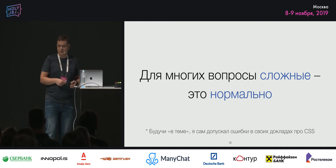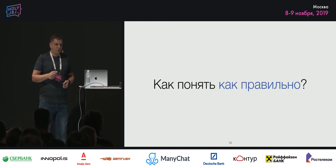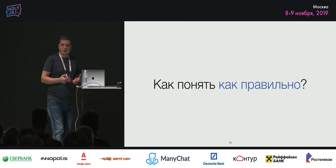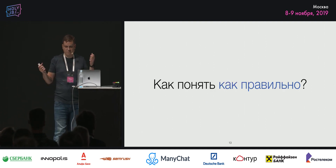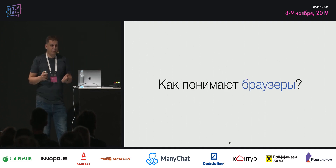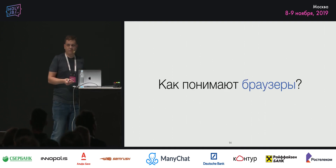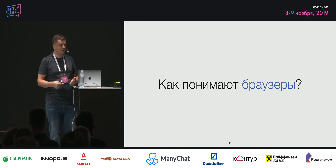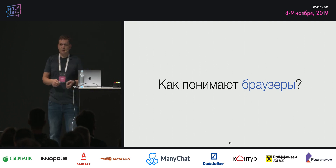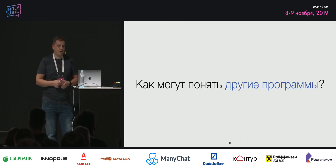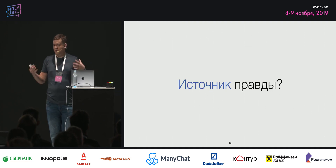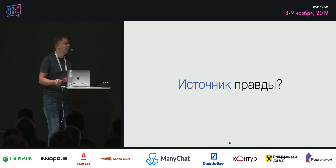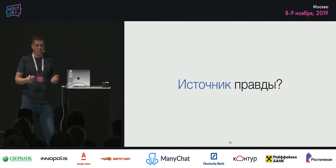То есть все ошибаются — это норм. Но как же нам понять, как правильно должно быть? То есть почему именно так? Как вообще понимают браузеры, что значат какие-то свойства, из чего они состоят? Как это могут понять другие программы? Где источник правды? Как вообще устроен CSS, из чего он состоит и как работает внутри?